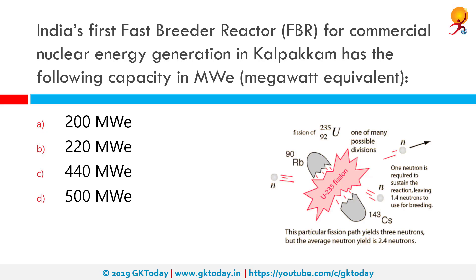India's first fast breeder reactor for commercial nuclear energy generation in Kalpakkam has a capacity of 500 megawatt equivalent. These reactors employ liquid metal fast breeders which convert uranium-238 into fissionable isotope plutonium-239 by means of artificial radioactive decay. The plutonium-239 is then bombarded with high-speed neutrons.